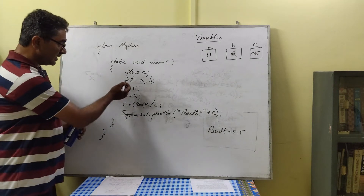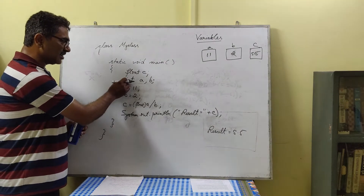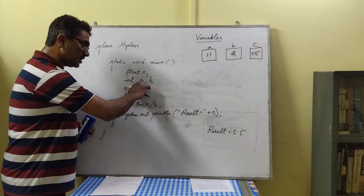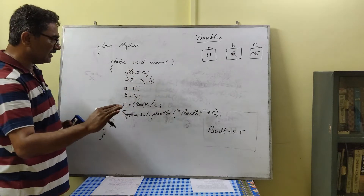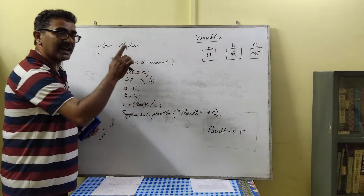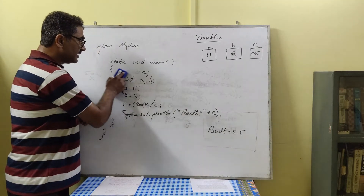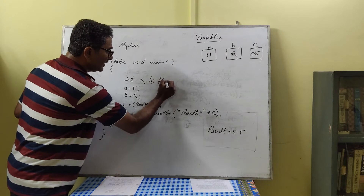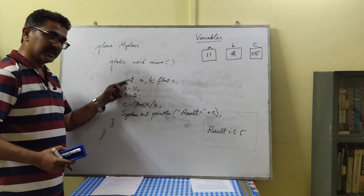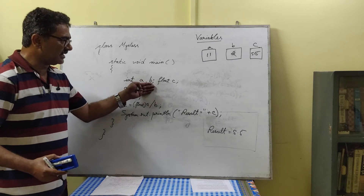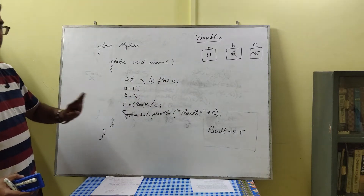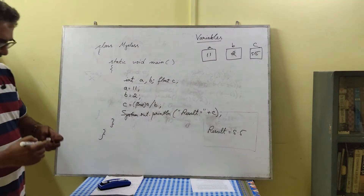Please remember: you cannot declare integer and float type variables together on the same line. Use separate lines. In Java, a semicolon indicates the end of a line. So 'int a, b;' declares a and b as integers, and 'float c;' on a separate line declares c as a float — a variable that can hold a number in decimal.